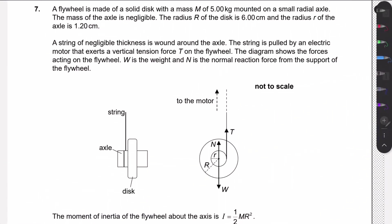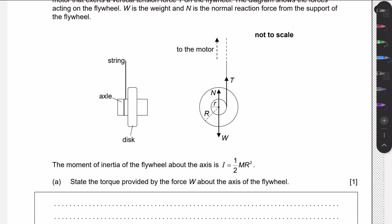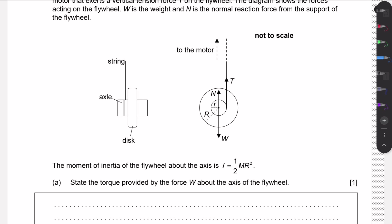Welcome to this new video. We're going to go through question 7 in the November 2019 Paper 3, which is a rigid body mechanics question in the new syllabus. We're given a flywheel made of a solid disk with mass and radius, with a string of negligible thickness wound around an axle. A motor exerts a tension force through the string onto the inner axle, making the assembly rotate. We also have the normal force and weight force, and we're given the moment of inertia of this system.